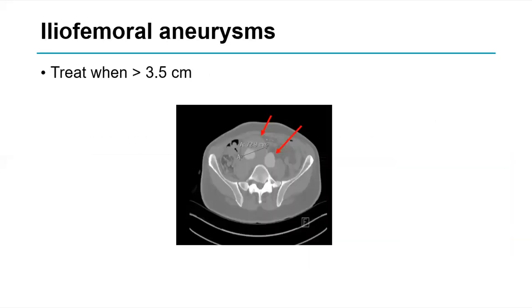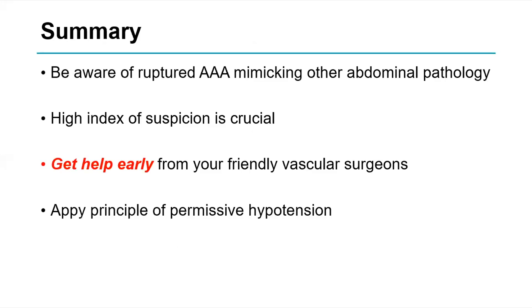Iliac artery aneurysms: the current guideline recommends treatment when they reach more than 3.5 cm. The CT scan shows arrows pointing to bilateral iliac artery aneurysms, with one on the right measuring 7.3 cm. In summary: be aware of ruptured AAA mimicking other abdominal pathology. A high index of suspicion is crucial. Get help early from your vascular surgeon and apply the principles of permissive hypotension. Do not over-resuscitate these patients — the consequences may be more dire.